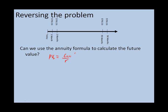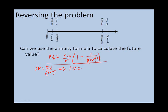We can't use the annuity formula directly, because the annuity formula deals with present value, not future value. Here is our annuity formula, and you can see nowhere in it do we have future value. However, if we can calculate the present value, we know that present value equals future value divided by 1 plus r to the power t — which means if we know the present value, we can calculate the future value. Future value equals present value multiplied by 1 plus r to the power t. In other words, we can use a two-step approach: Step 1, calculate the present value of the annuity; Step 2, calculate the future value given the present value.